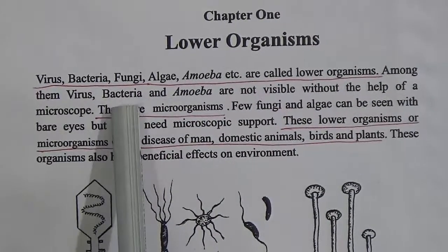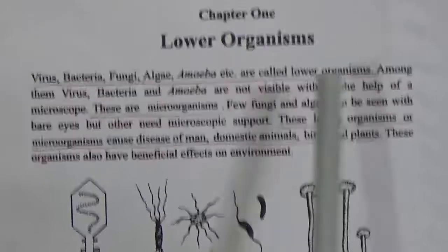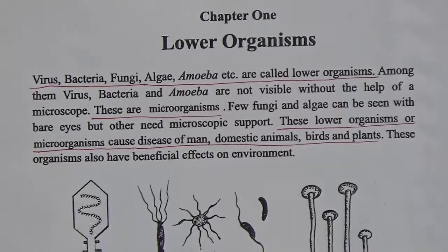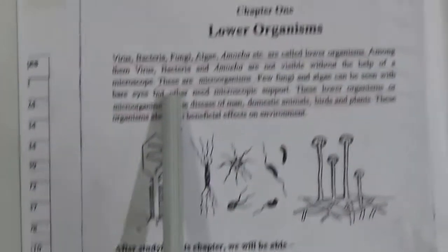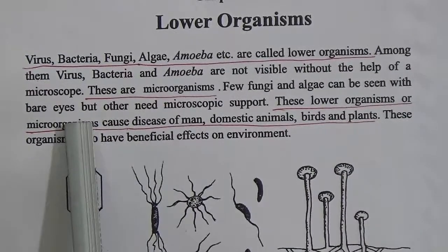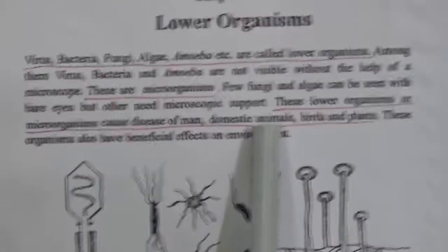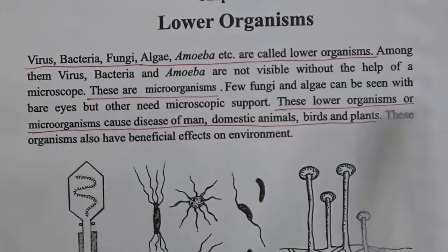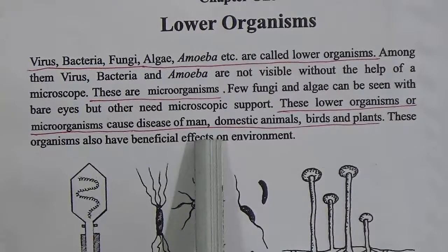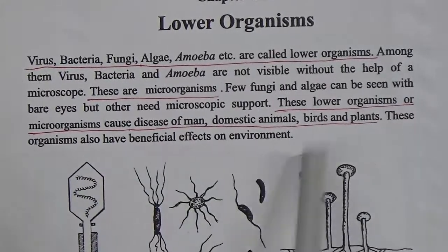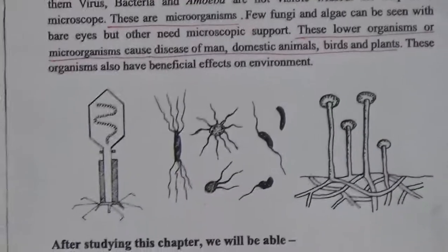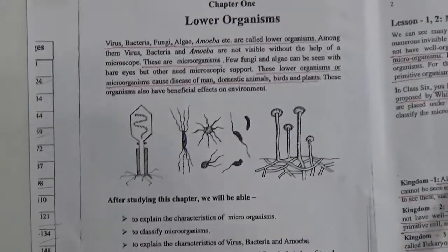Among lower organisms, virus, bacteria, and amoeba are not visible without the help of a microscope, so they are called microorganisms. Few fungi and algae can be seen with bare eyes, but others need microscopic support. These lower organisms or microorganisms cause diseases in humans, domestic animals, birds, and plants. These organisms also have beneficial effects on the environment.